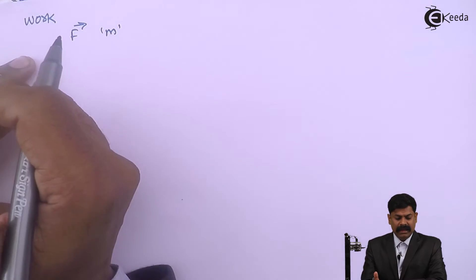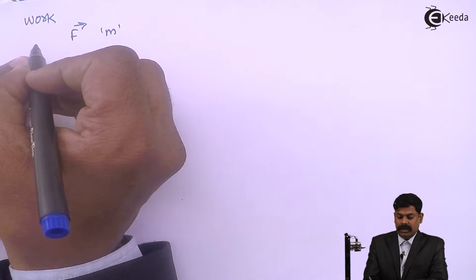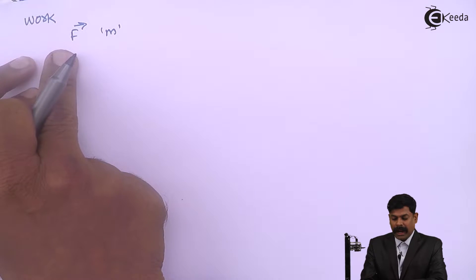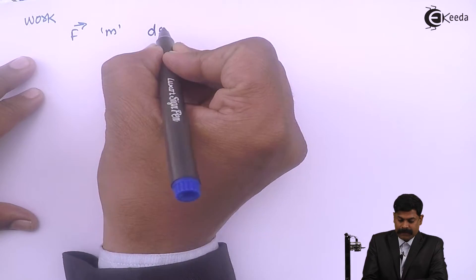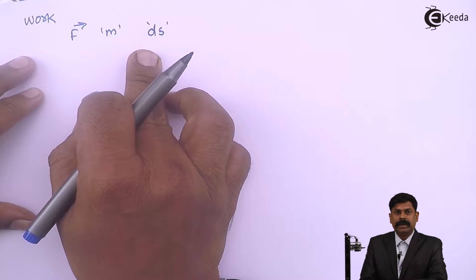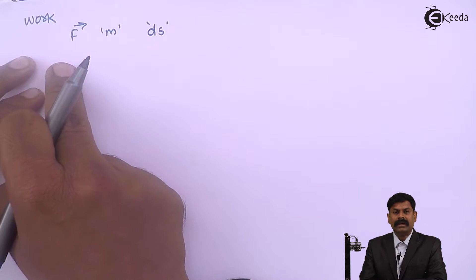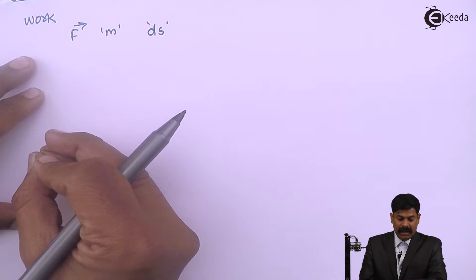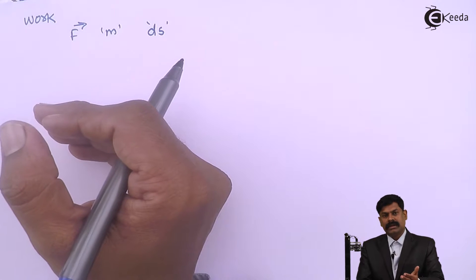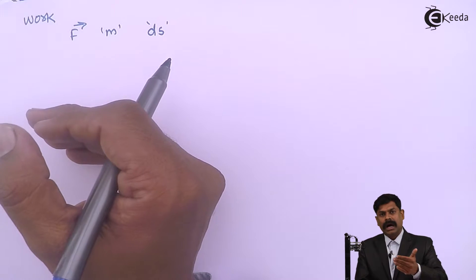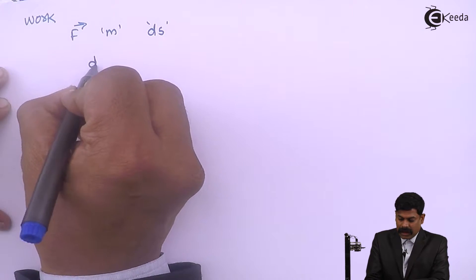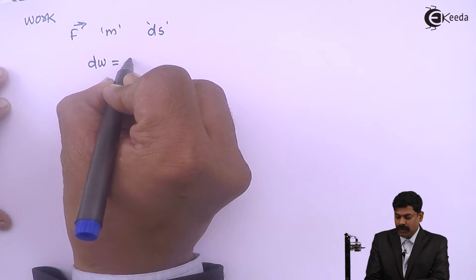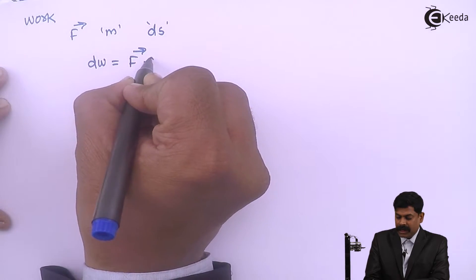The body is initially at rest. Now the body, because of the applied force F, displaces through an infinitesimal small displacement ds. ds is the displacement of the body because of the applied force F, in the direction of that force. Then small work is done: dW equals force multiplied by displacement ds.